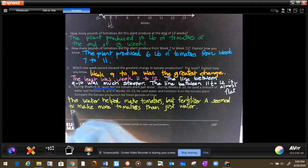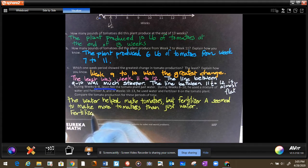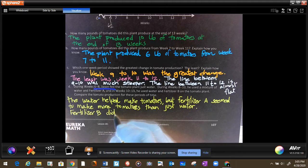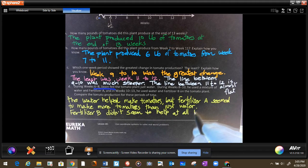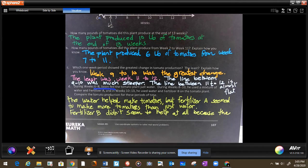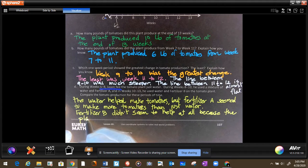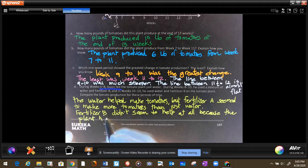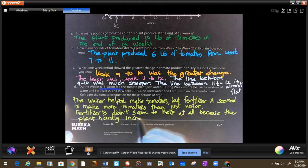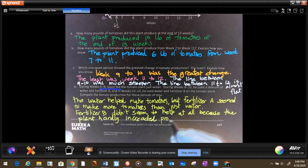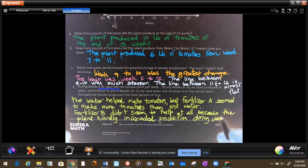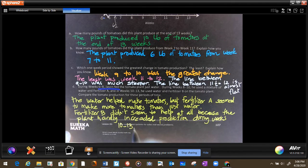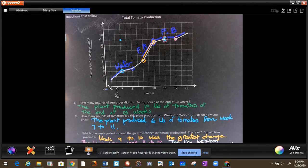Fertilizer B didn't seem to help at all because the plant hardly increased production during weeks 10 and 13. And that will be your answer for this one. So see, now we're looking at problems that are real-life problems, and we're answering questions based on the graph that we learned.